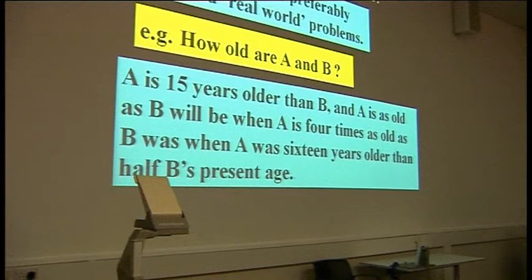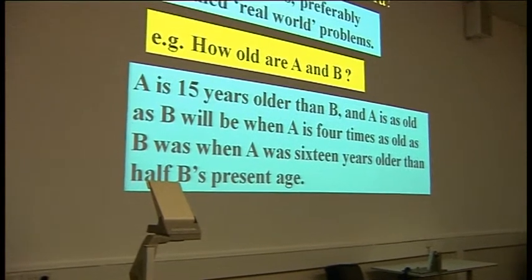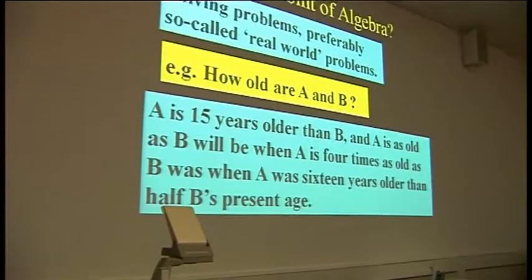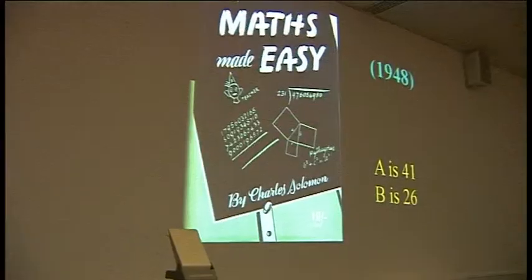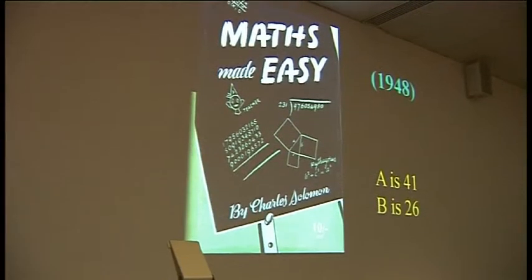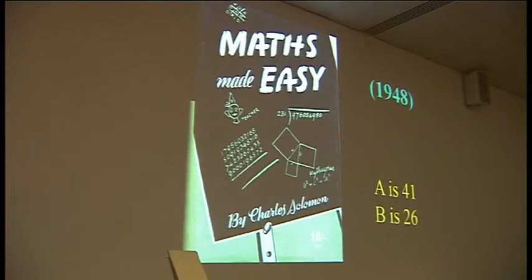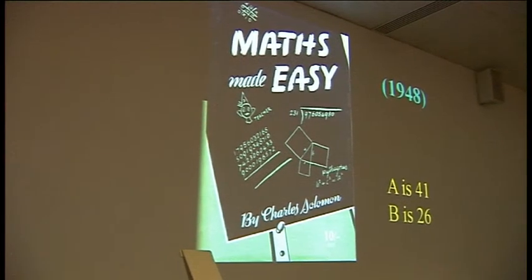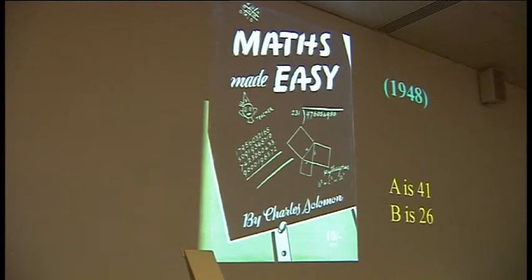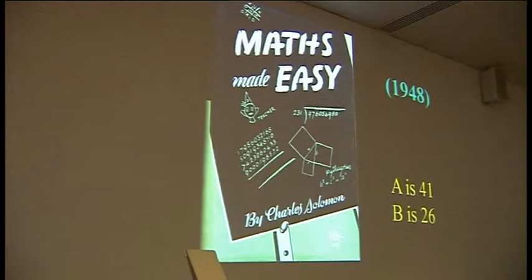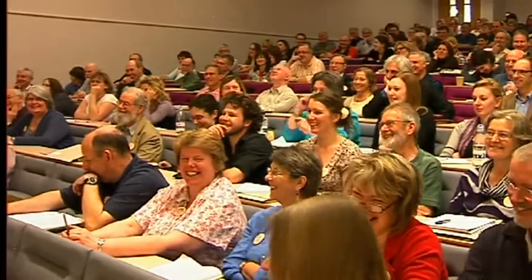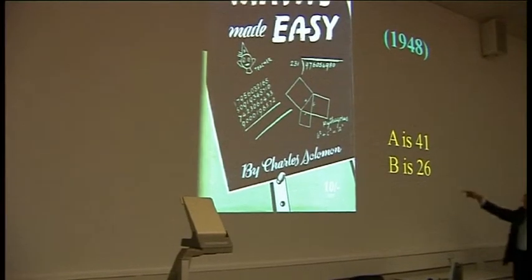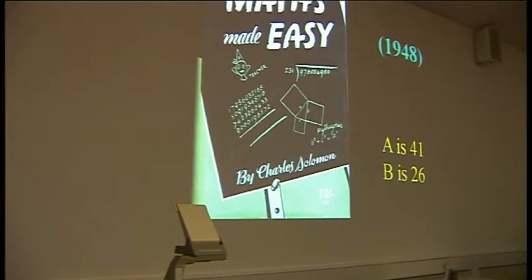Actually, to be fair, this is a rather complicated example of that sort of thing, but it is actually a real problem — it came from a book called Maths Made Easy, published in 1948. And I'm sorry to spoil it for those who like problems: A is 41 and B is 26.